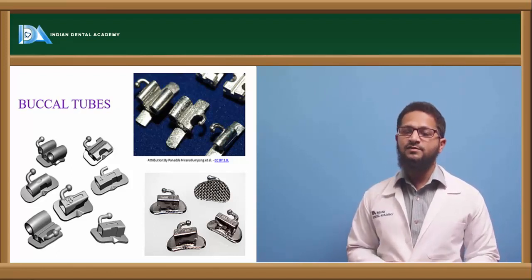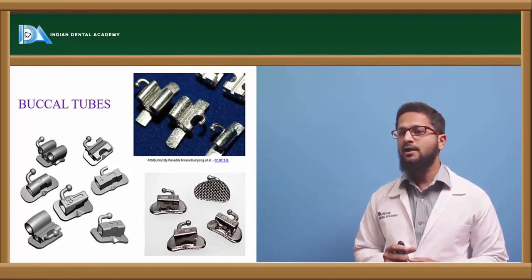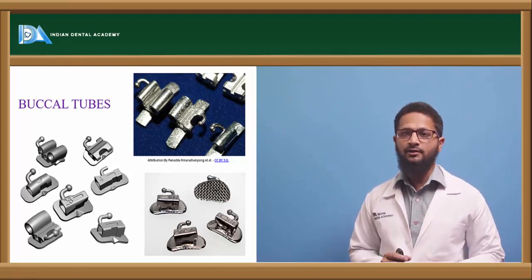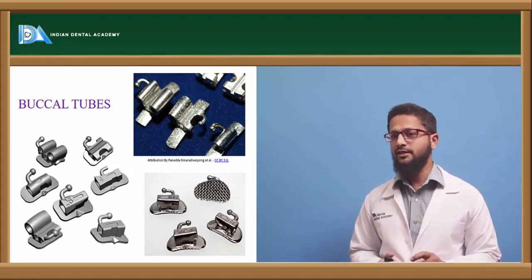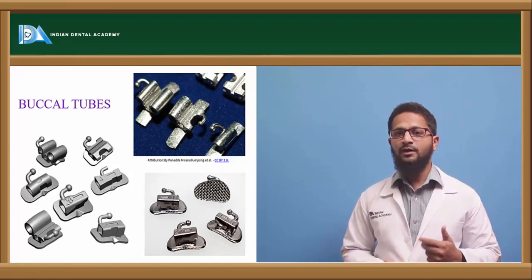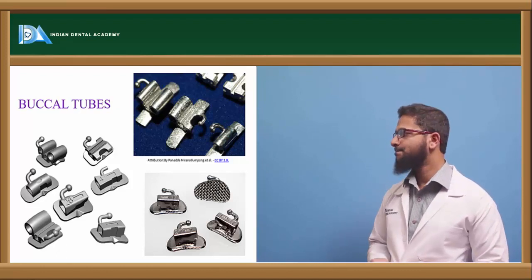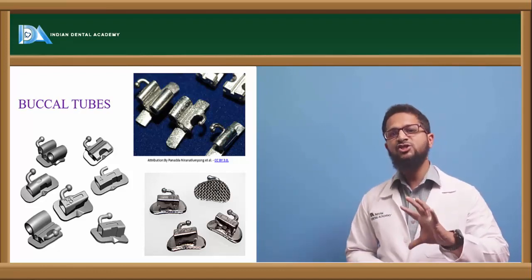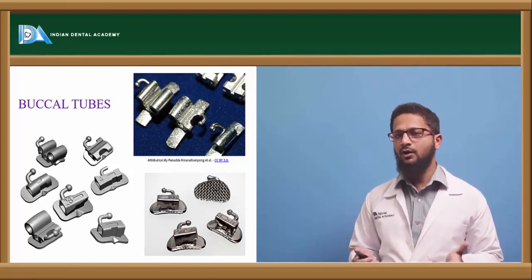Buccal tubes are attachments welded onto bands, mostly used in the posteriors. They are usually made of stainless steel and have either a round or rectangular cross-section. Buccal tubes allow passage of the arch wire through them, and are mostly used on posterior teeth — particularly molars. Single, double, or triple buccal tubes are available depending on the requirement, and can be welded onto the band material. Bondable buccal tubes have a mesh on their base for proper adhesive resin flow, while weldable types are directly welded onto the band.